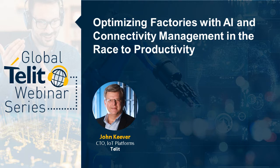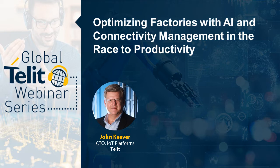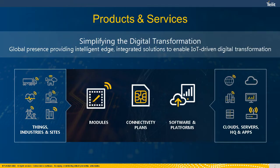And with that, John, I will hand it over to you to kick us off today. Okay, thank you, Amanda. Let's take a look at this: Optimizing factories with AI and connectivity management in the race to productivity. That's definitely a mouthful. There's no question in today's domain with supply chain challenges that optimizing factories is critical. The opportunity to start applying artificial intelligence and connectivity management is a key element of how people approach their productivity solutions — how we can leverage these technologies to improve and optimize our processes within the manufacturing domain.